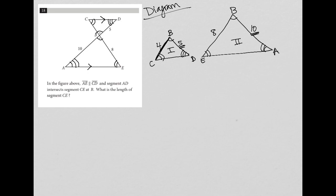All right, so let's keep reading. Then it says segment AD intersects segment CE at B. So we could see that we already took care of that information. And then it says, what is the length of segment CE?